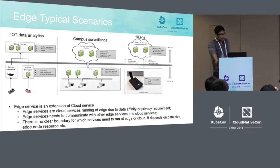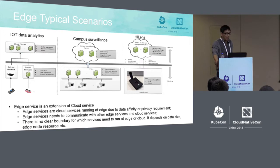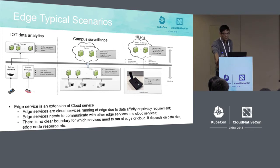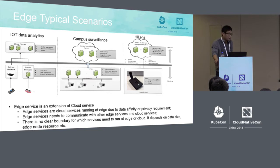Edge services still need to communicate with other services — for example, in the cloud or at other edge nodes — and there is no clear boundary between cloud services and edge services. We cannot definitively identify which services must run at the edge. For example, if the edge node is a Raspberry Pi with limited CPU, we might only put face detection at the edge and leave face recognition in the cloud.